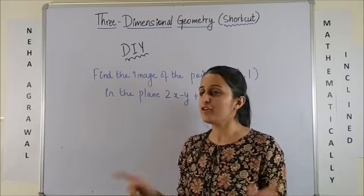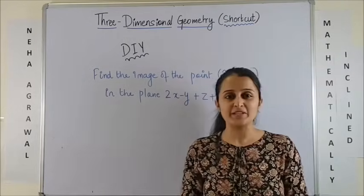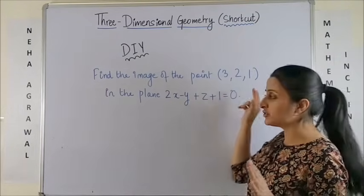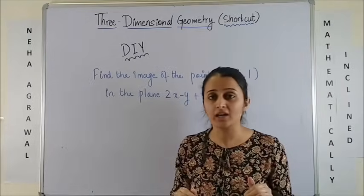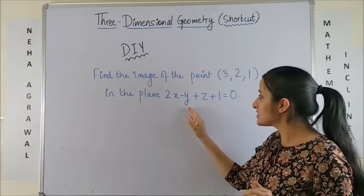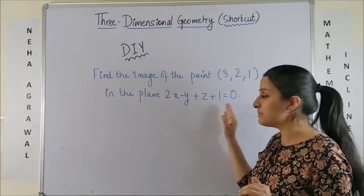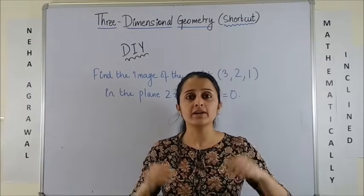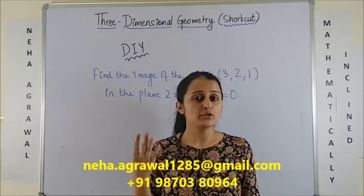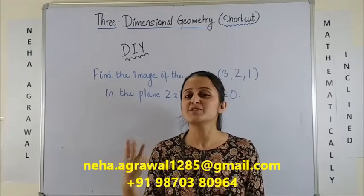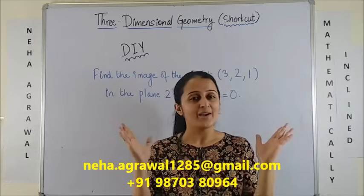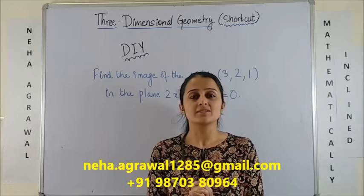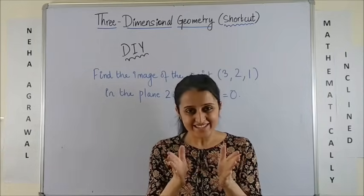It's time for our do-it-yourself question. Find the image of the point (3, 2, 1) in the plane 2x minus y plus z plus 1 equals 0. You know the procedure — get started! The first three correct answers, I always name them in my next video.